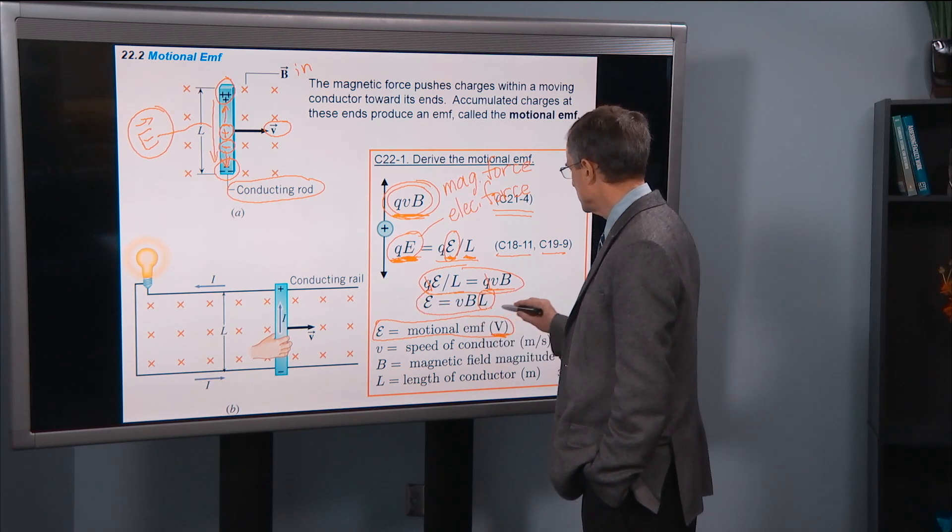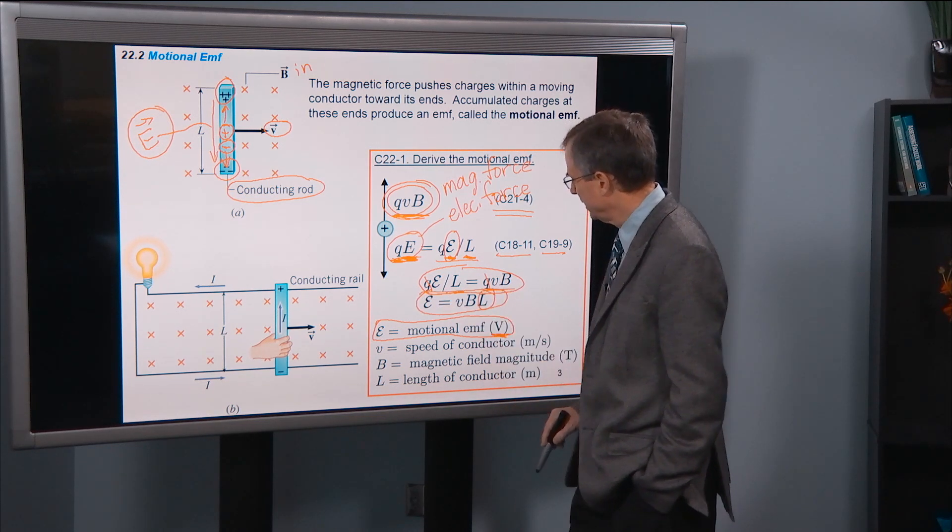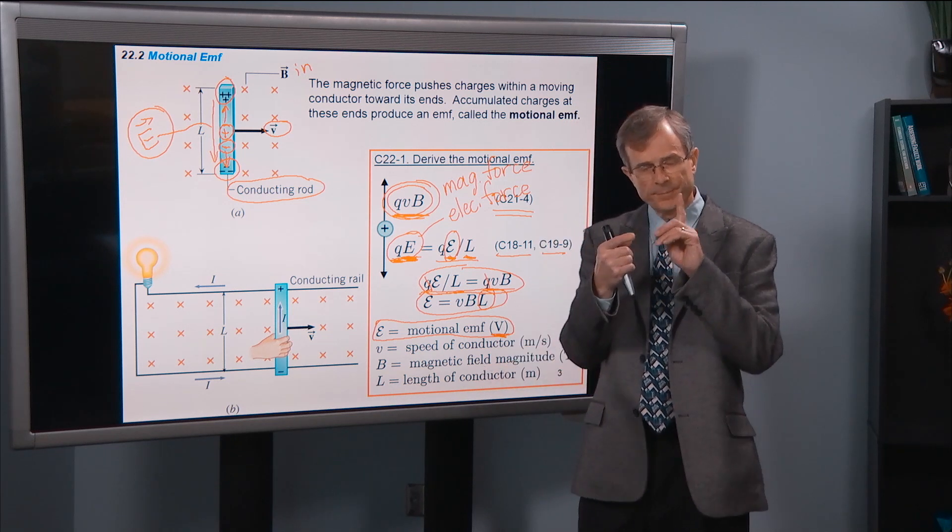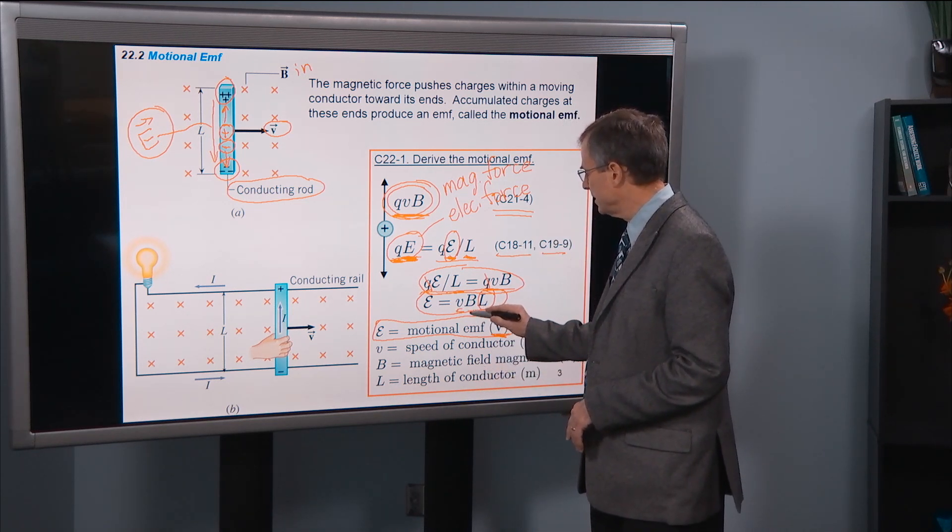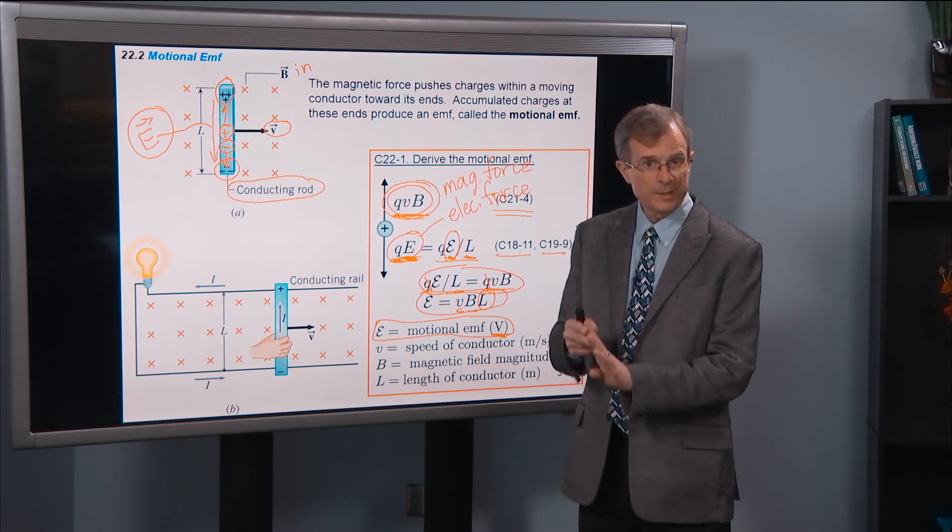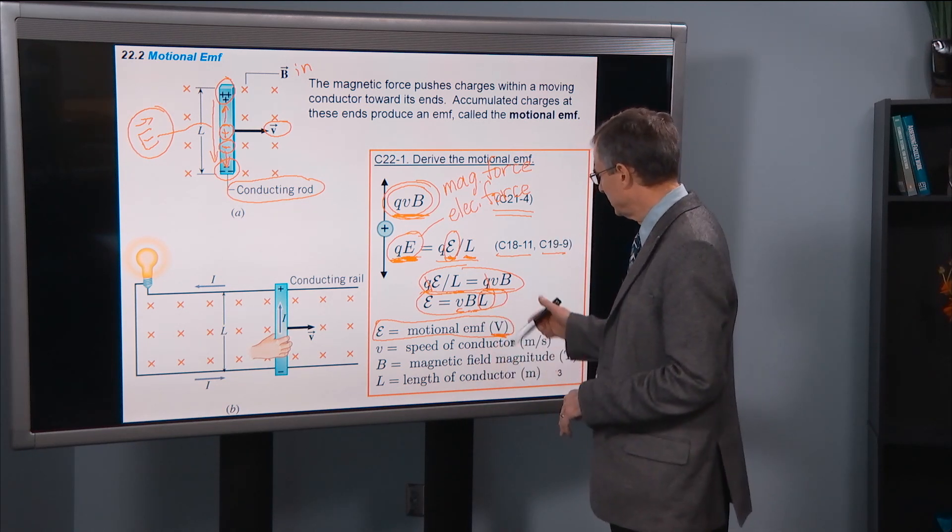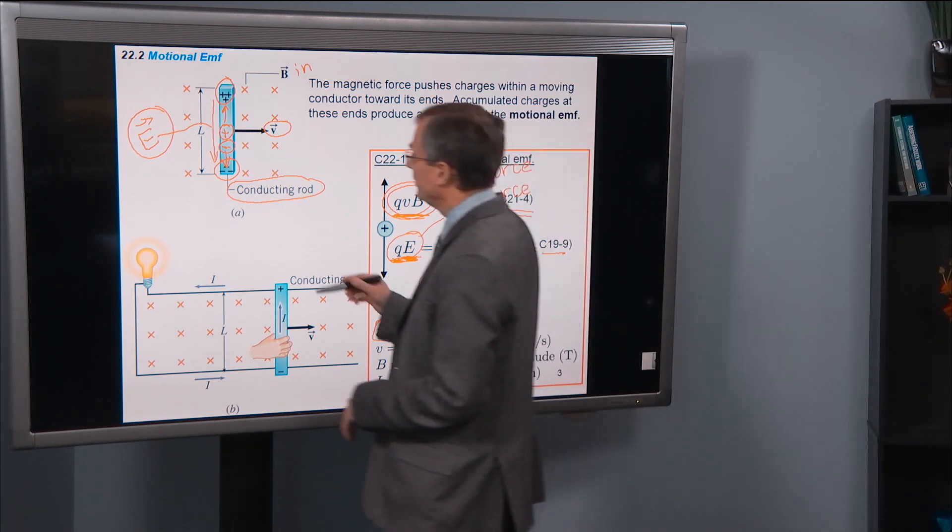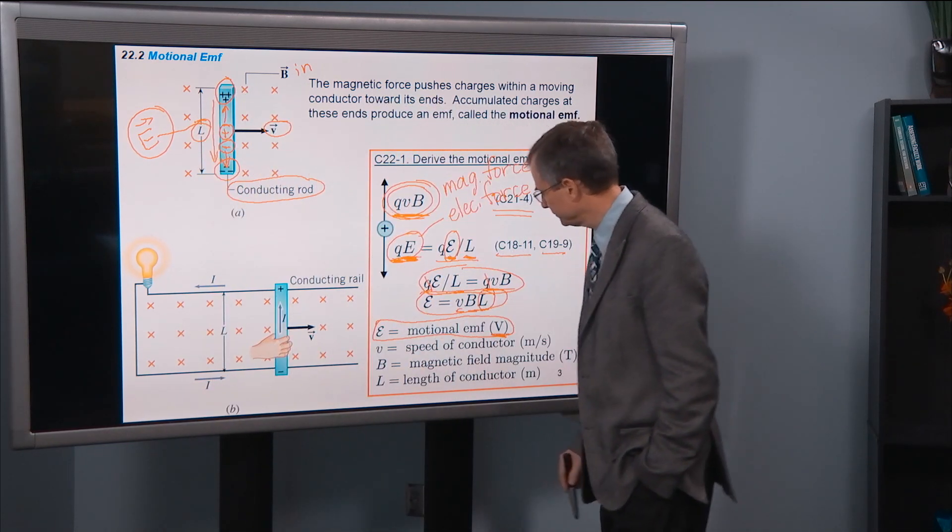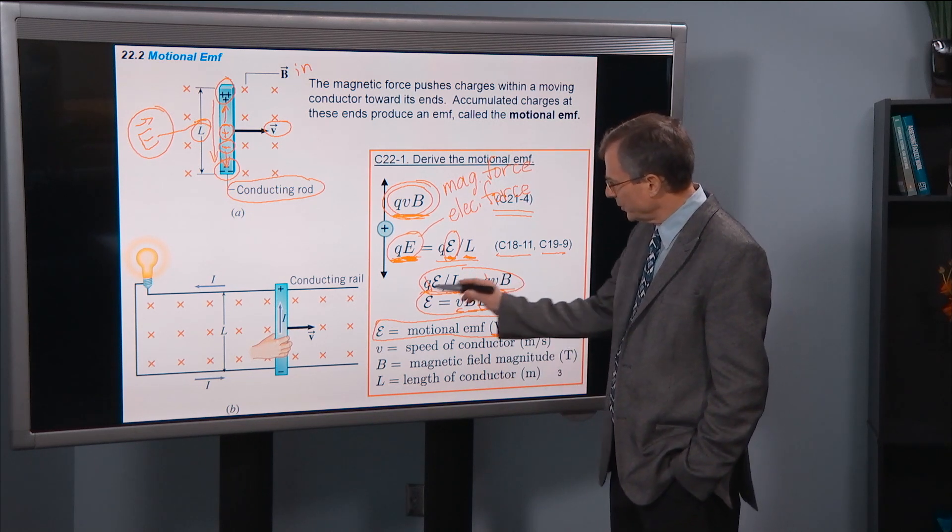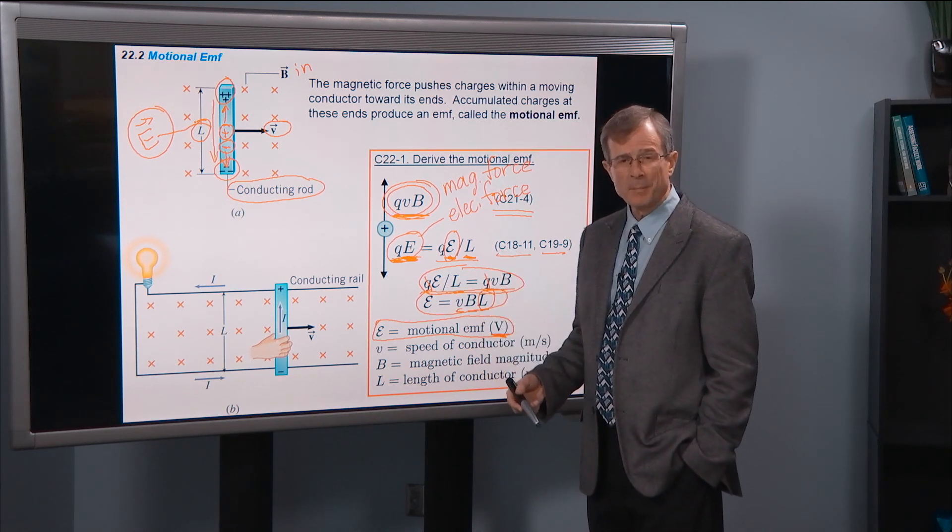And this is the result for the motional EMF. Motional EMF is the speed v, times the magnitude of the magnetic field, times L, which is the length of this bar. It's moving. And you can think of this EMF as if it were a battery.